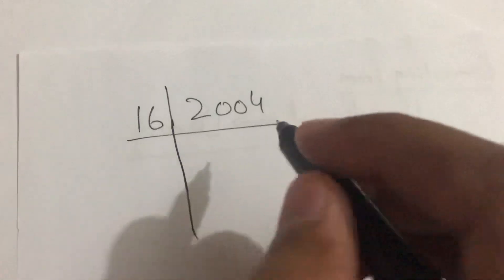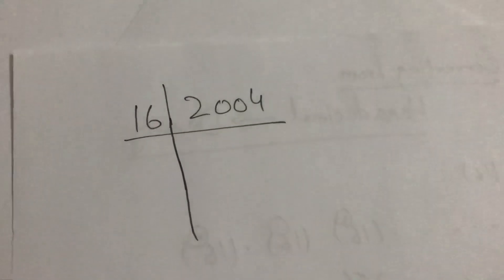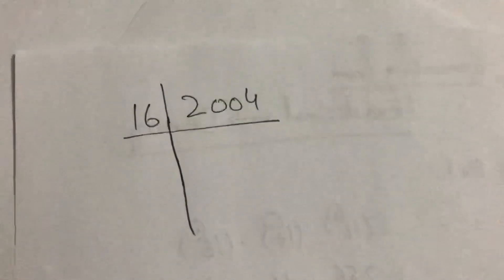We will do division: 2004 will be divided by 16. This division will be same as we have done in the previous binary conversion.